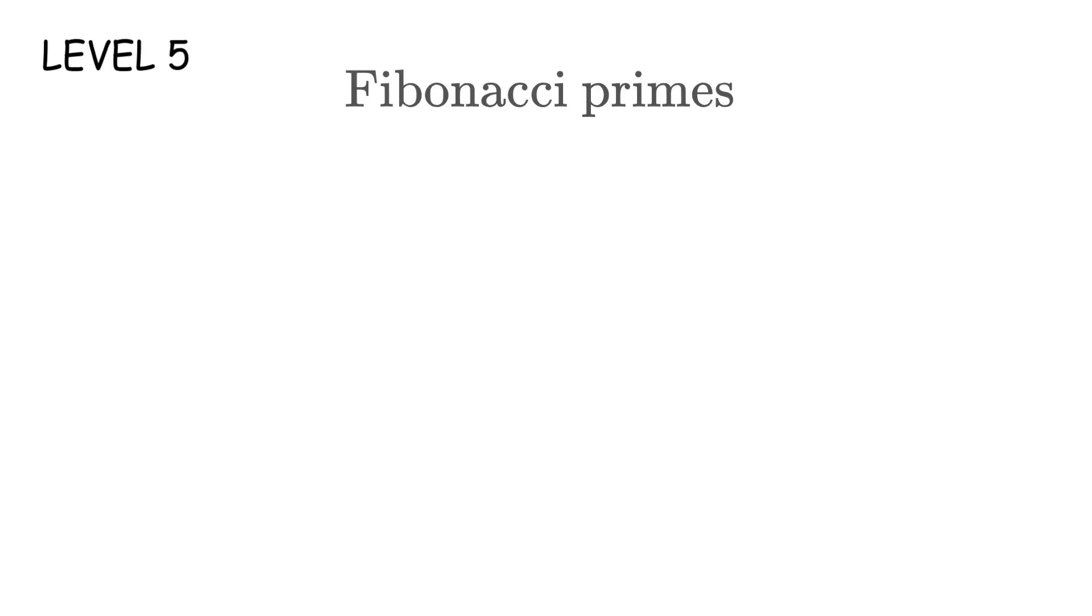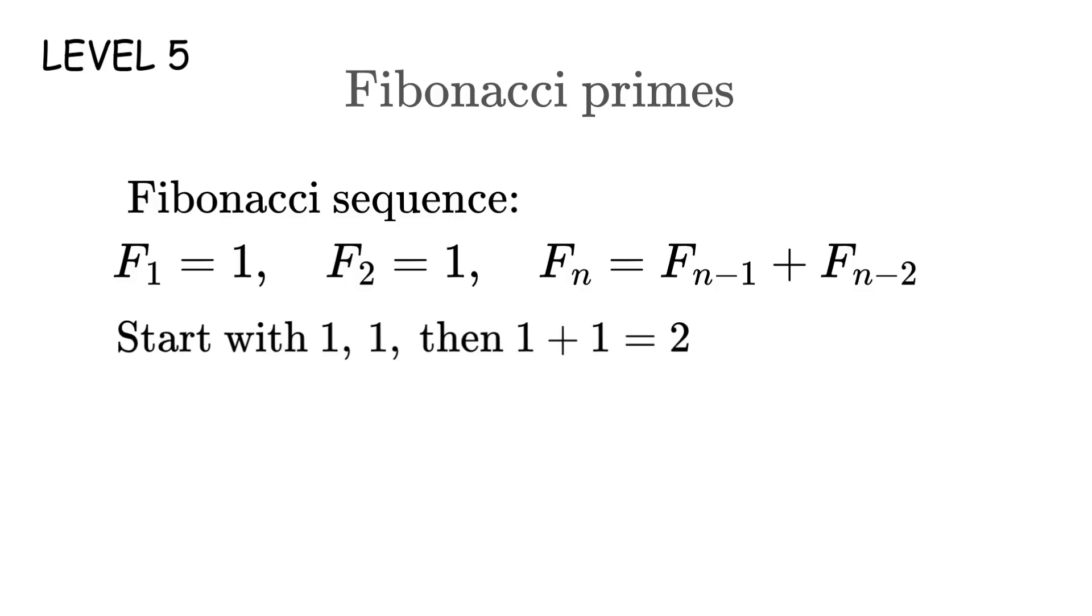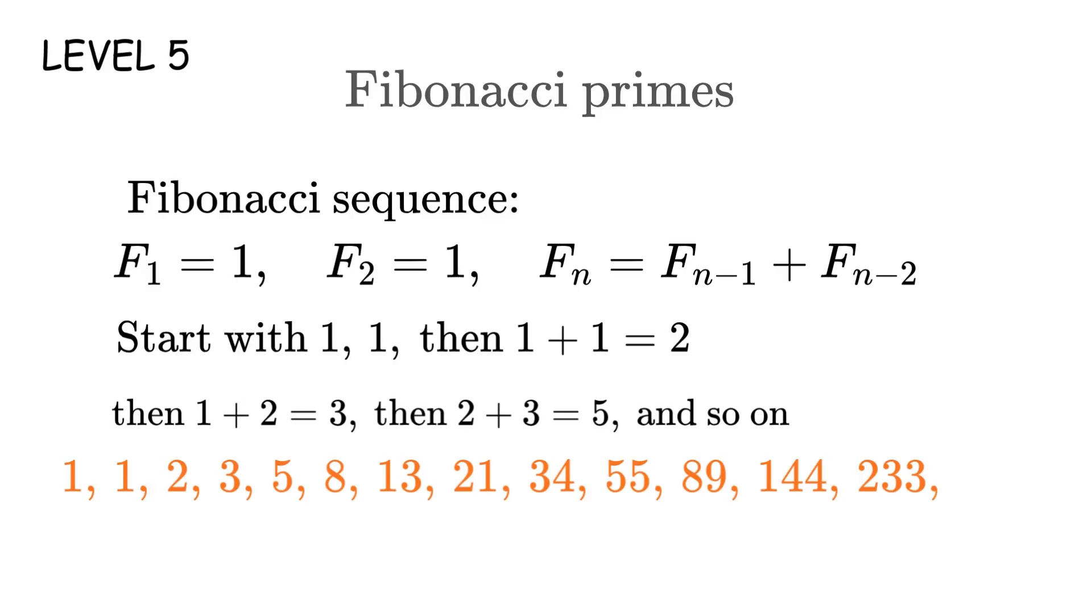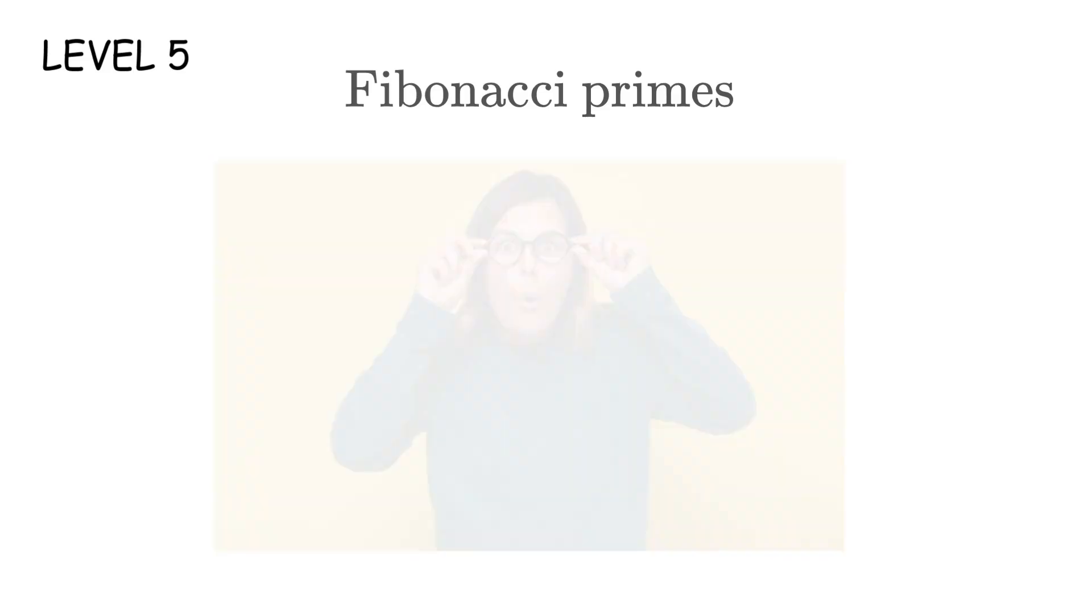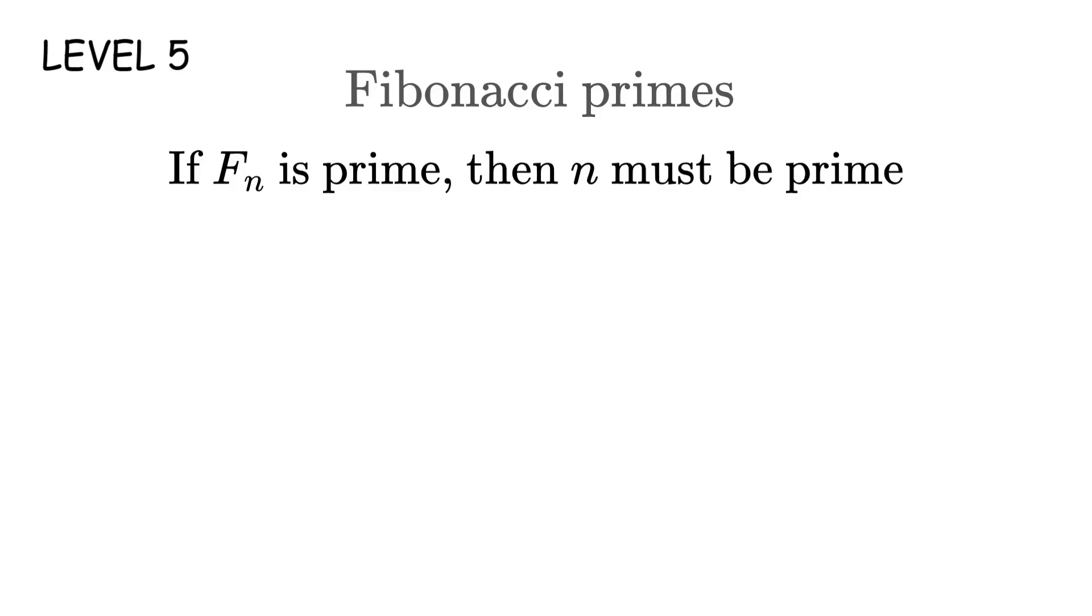Level 5. Fibonacci primes. The Fibonacci sequence is where each number is the sum of the previous two. Start with 1,1, then 1 plus 1 equals 2, then 1 plus 2 equals 3, then 2 plus 3 equals 5, and so on. A Fibonacci prime is a Fibonacci number that's also prime. Now here's an interesting property. If F_n is prime, then n must be prime. With one exception for F_4 equals 3.